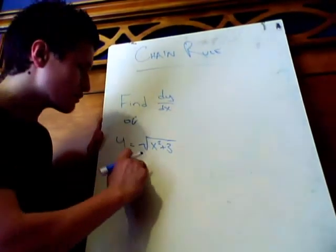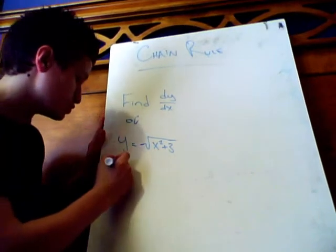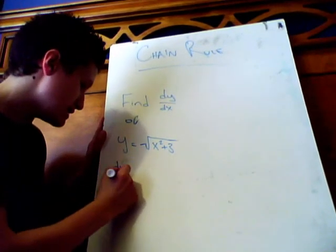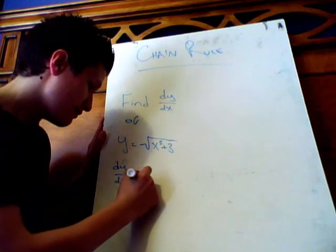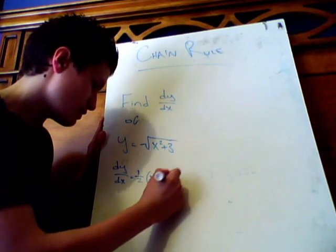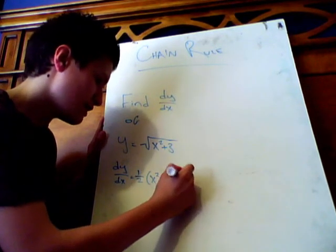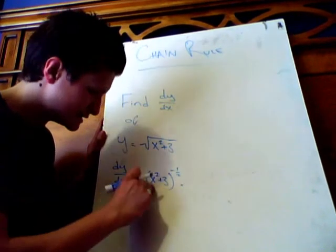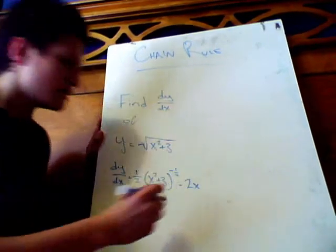Once again, you want to look at this outer function. The outer function, in this case, is the square root function. So, dy/dx would equal 1/2 times x squared plus 3. And 1 minus 1/2 is negative 1/2. Times the derivative of the inside, which is 2x.